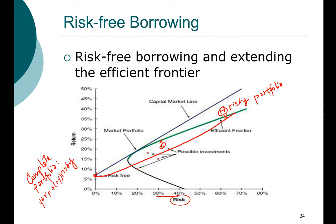Under the separation theorem, the risky portfolio formation is done by somebody else — it can be a professional manager — and the individual investor only has to choose how much risk to take. You can see that if you want a risk level of 50%, you could achieve a higher risk-return trade-off by combining the risk-free portfolio with the optimal risky portfolio rather than choosing a high-risk portfolio directly. In the CAPM setup, that optimal risky portfolio is the market portfolio, because every single investor with the same information will do the same calculation and agree this is the best portfolio.